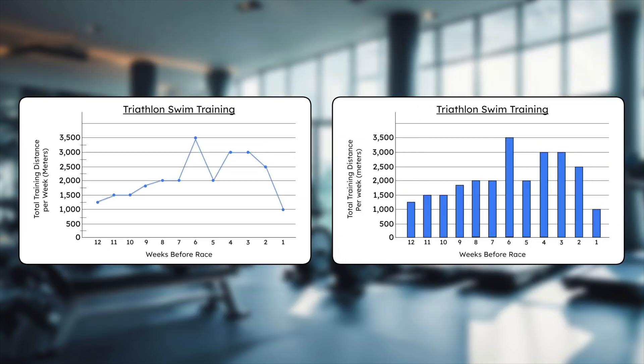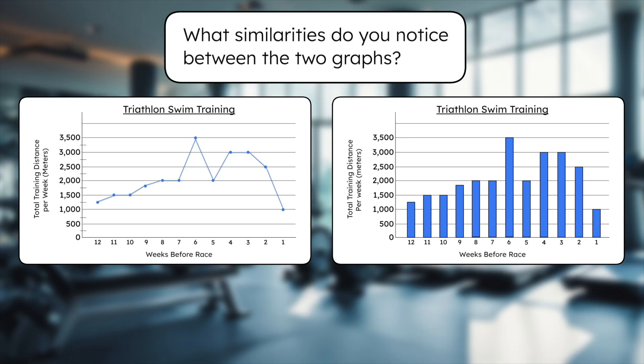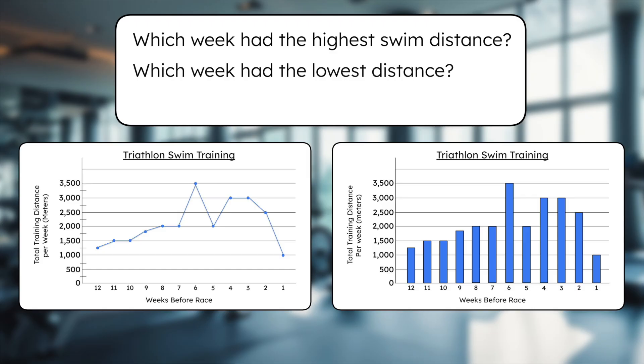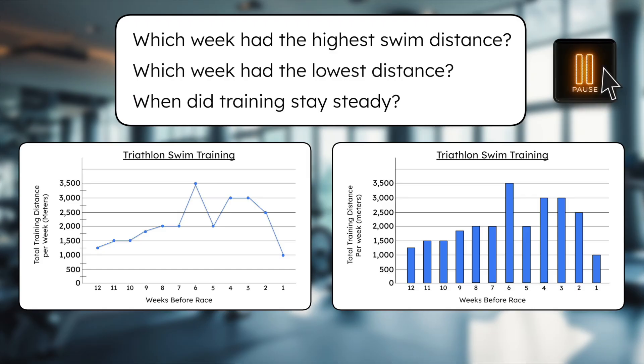It shows the changes in how far the athletes swam as they prepared for race day. Now compare this line graph to the bar graph we used in our last lesson. What similarities do you notice between the two graphs? Check out the high points, low points, and changes in distance over time. Which week had the highest swim distance? Which week had the lowest? When did training stay pretty steady? Pause here to analyze the graphs and how they tell the same data story in different ways.